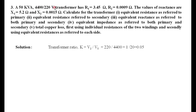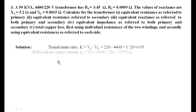First, find the transformation ratio, needed for transferring resistance and reactance from one side to the other. The transformation ratio k equals secondary voltage divided by primary voltage, that is 220 divided by 4400, which equals 1/20 or 0.05.